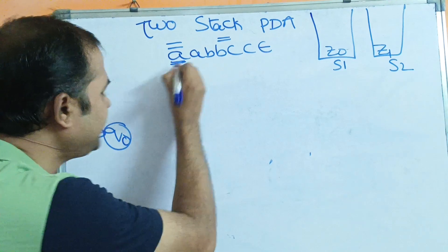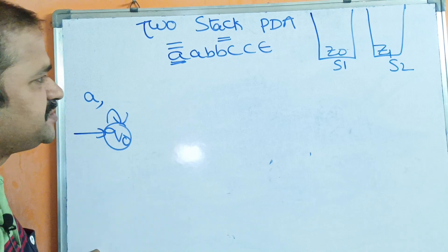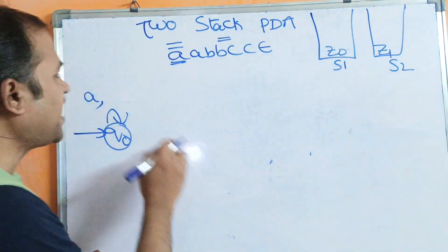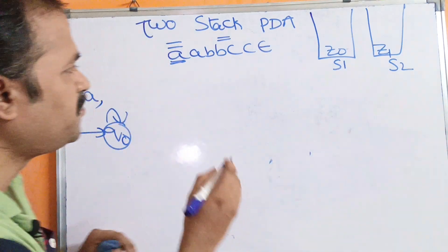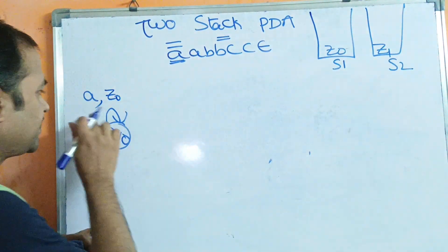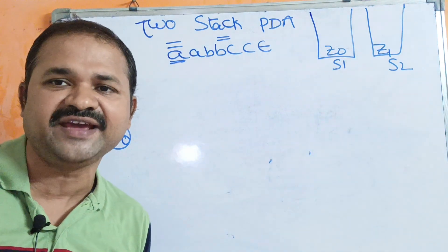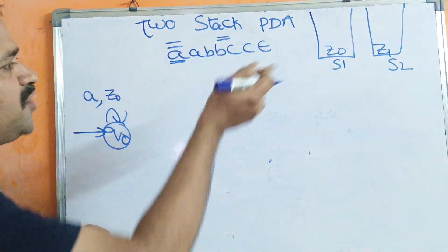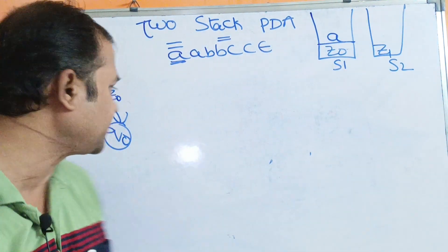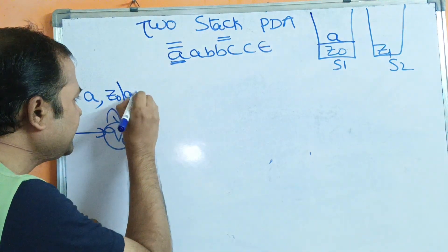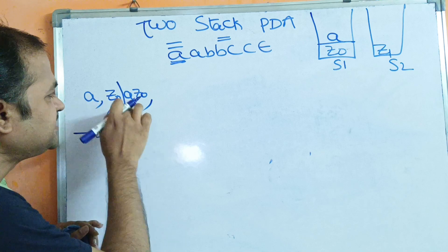The first input symbol is A. The first argument is the input symbol, the second is stack 1 content, and the third is stack 2 content. Stack 1 topmost symbol is Z0. If the input symbol is A and stack 1 topmost symbol is Z0, we push A onto stack 1, replacing Z0 with AZ0.